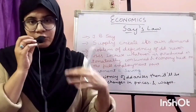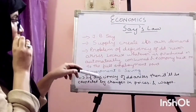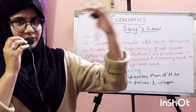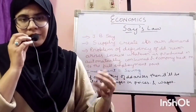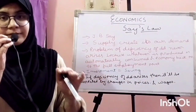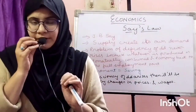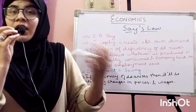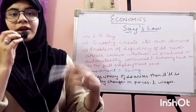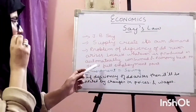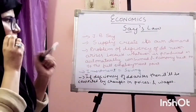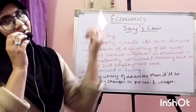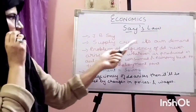Classical economists always believed that saving is always equal to investment. In the economy, there is a middle class, a labor class, and an employer class. The labor class doesn't have enough income to save, but capitalists and employers do. They save in the bank, and that saving is then invested. So automatically, investment equals saving. When you invest, output increases, and so demand is created again — supply creates its own demand.